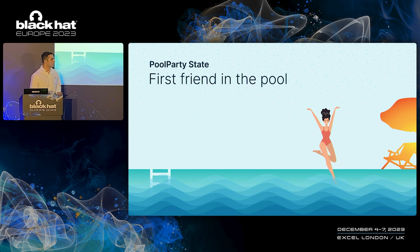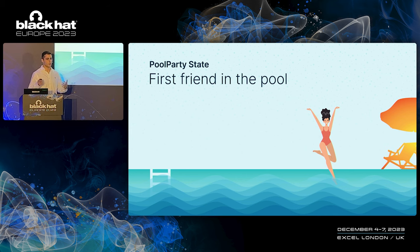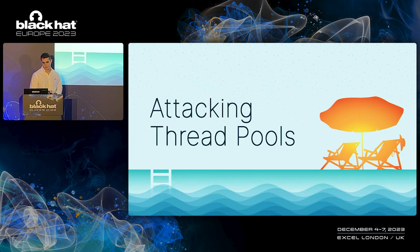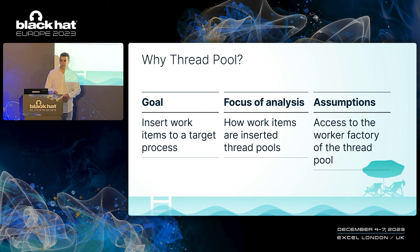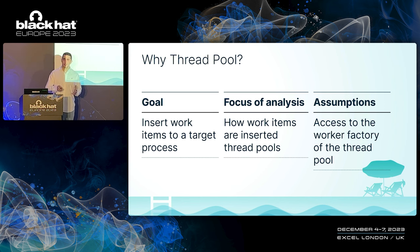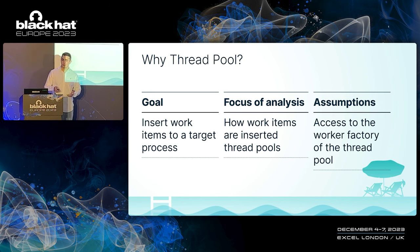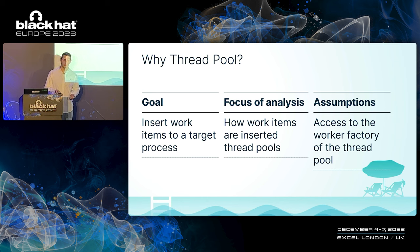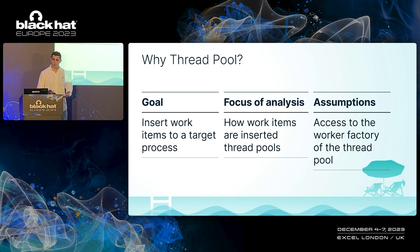We do not want to leave this friend all alone in the pool, so let's move on to explore the thread pool queues. When attacking the thread pool, my goal was to insert a work item into a target process. I knew that a correctly inserted work item will get executed by the worker thread at one point or another. My focus was on how work items are inserted into the different thread pool queues.